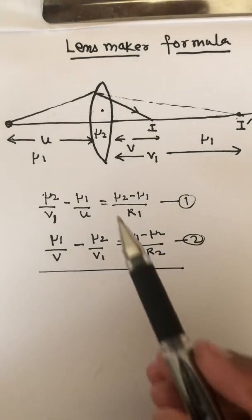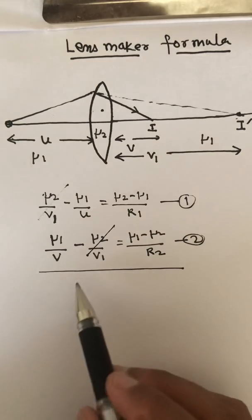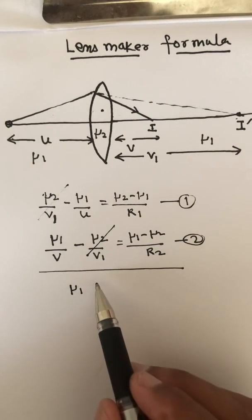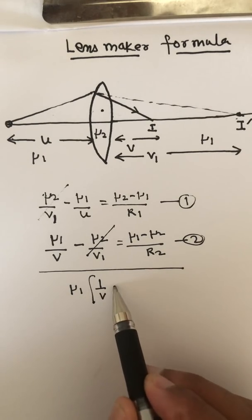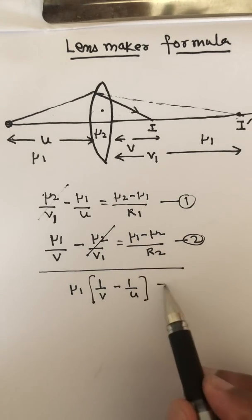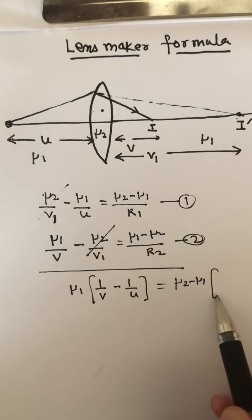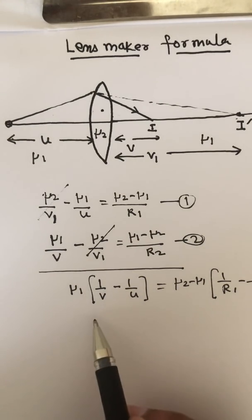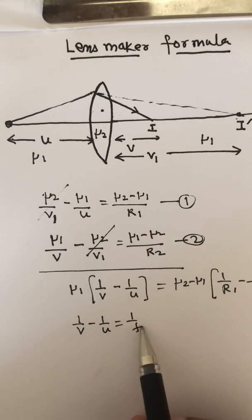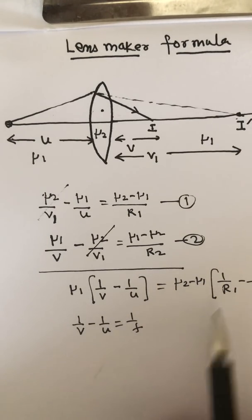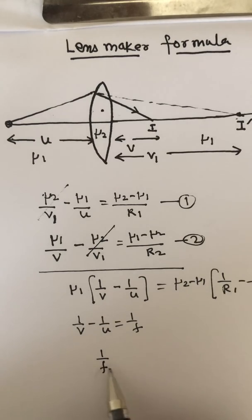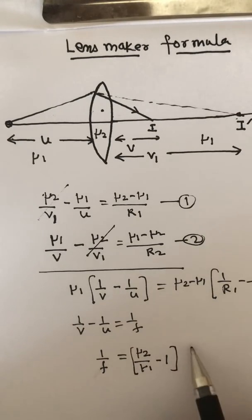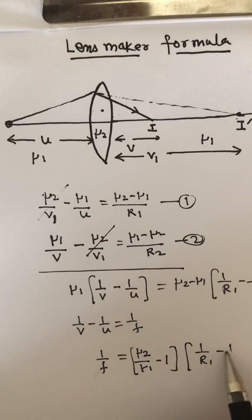Adding the two equations, the v1 terms cancel. We get: mu1 times (1/v minus 1/u) equals (mu2 minus mu1) times (1/R1 minus 1/R2). Dividing the complete equation by mu1 and writing 1/v minus 1/u as 1/f, we get: 1/f equals (mu2/mu1 minus 1) times (1/R1 minus 1/R2).